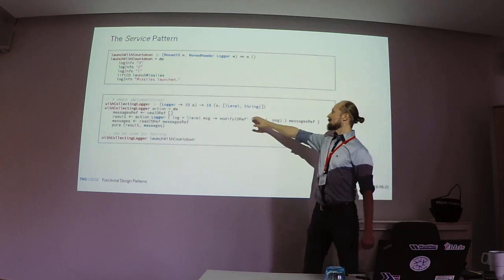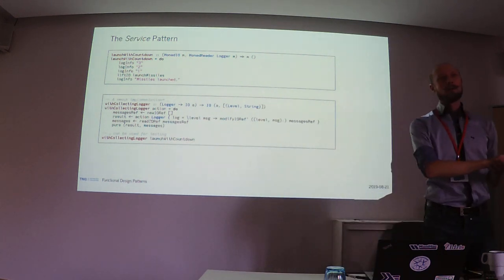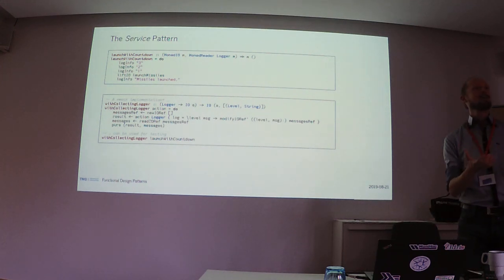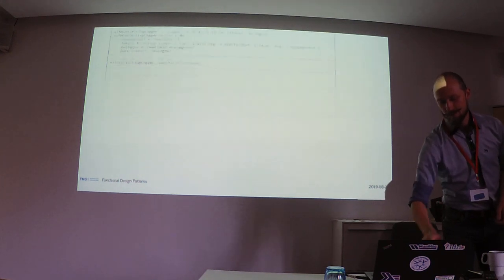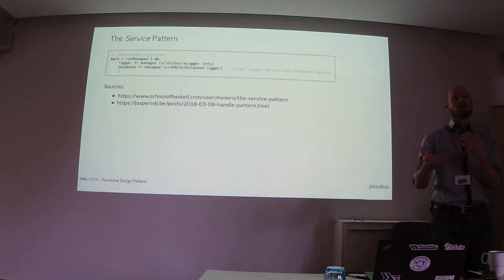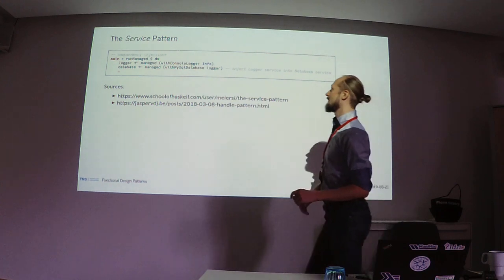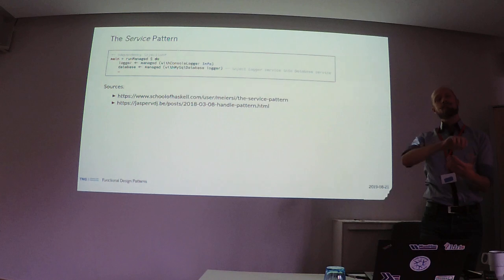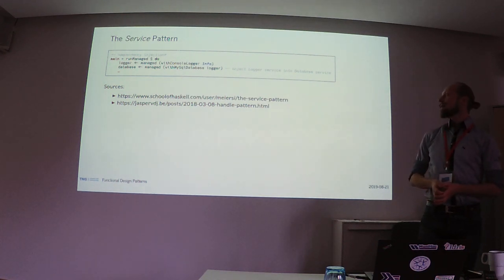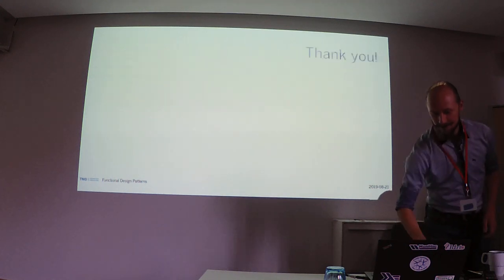For testing, we can create a mock implementation that collects log messages into an IORef instead of printing them, then return them afterwards. When you have a more complex application with multiple services that depend on each other — for example a database service that also wants to log — you create instances of one service, pass service handles to other services inside a managed monad. That's essentially how you do dependency injection in Haskell. And that's the end of the main talk.